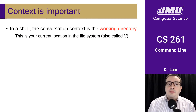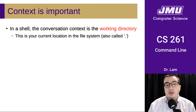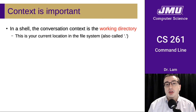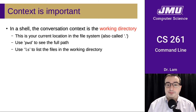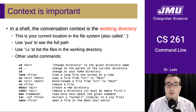One thing that's important in interacting with your computer via a command line interface is the idea of context. Context is important for any conversation, and in a shell, the conversation context is something called the working directory. This is where you currently are in your file system, often abbreviated with a shortcut dot. You can use the command PWD, or print working directory, to see the full path of where you are. You can use the command LS, for list, to see a list of all the files in the current working directory. There are also many other useful commands listed here, which you'll explore in the lab.